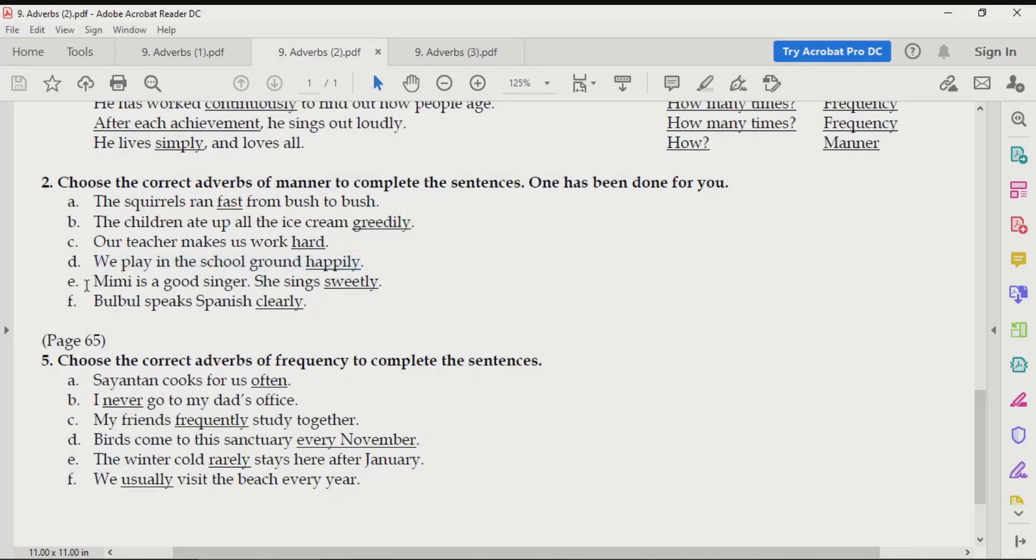Next one. Mimi is a good singer. She sings sweetly. How does she sing? Kis tarikay se voh gaati hai? She sings sweetly. Very easy to understand. This one is also very easy. Bulbul speaks Spanish clearly. Just as we said about sweetly, clearly is also almost the same thing.